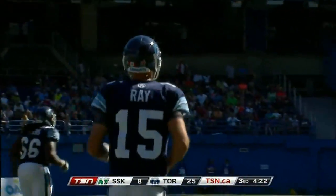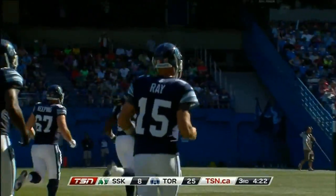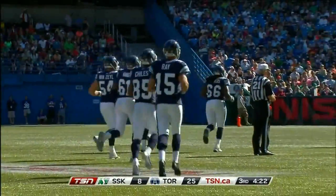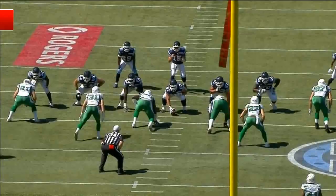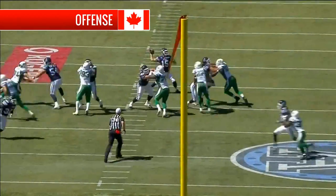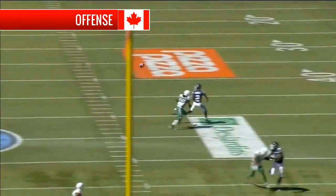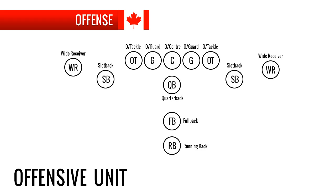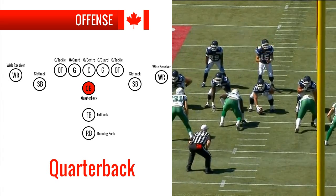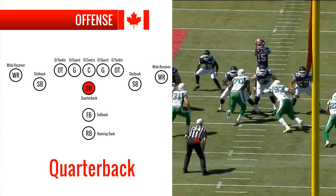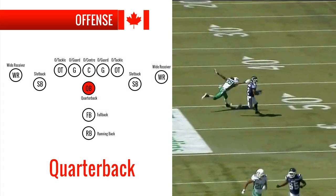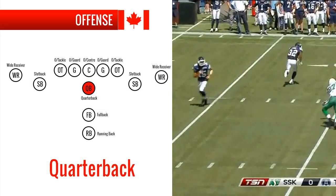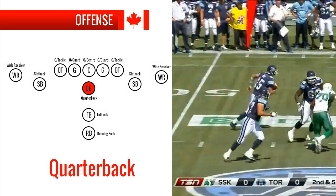The teams will usually have 3 different units of 12 players that come on the field at different times. They include the offense — these players will usually come on the field when they have possession of the ball. The quarterback is the most important player on the field, and he's the one who decides to pass the ball up the field, hand it off to a teammate so that they can run with it, or decide to run with it himself.